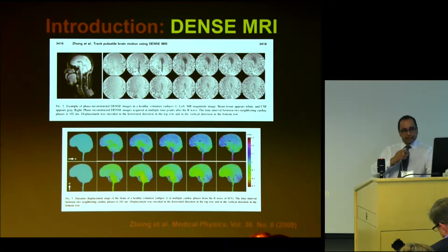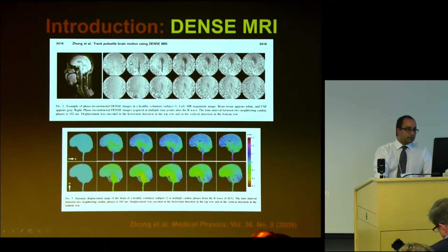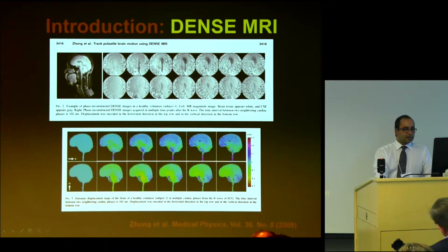This is some of the typical imaging we get with DENSE MRI. Here we can see that there's a lot of motion of the brain stem and the upper cervical cord across the cardiac cycle.